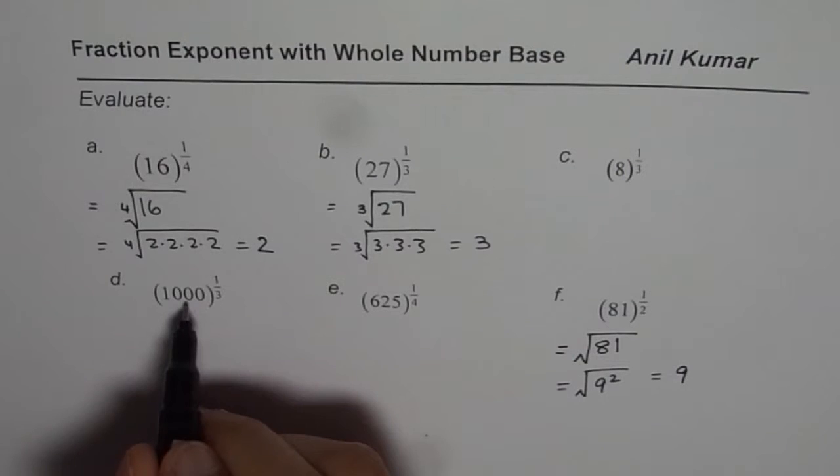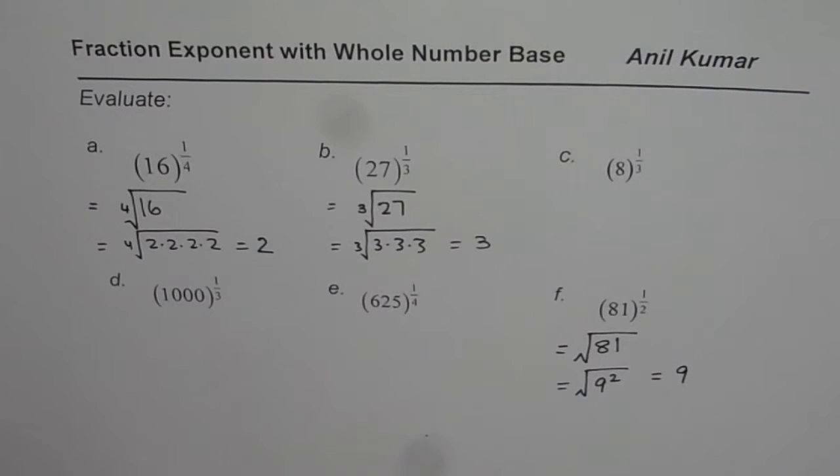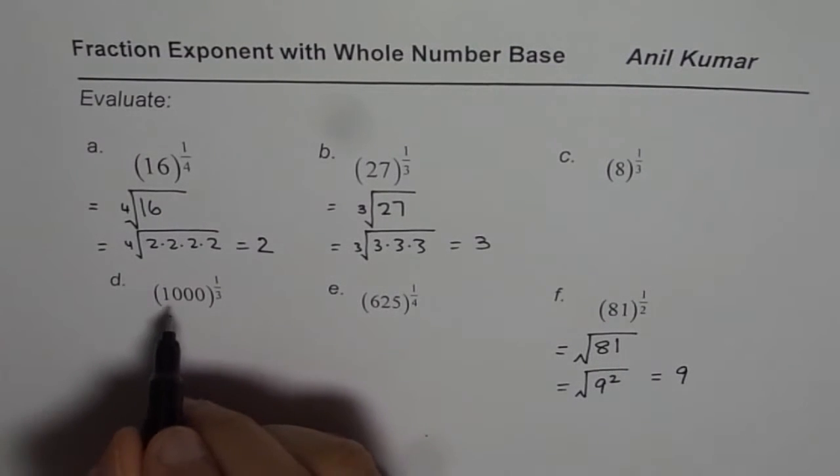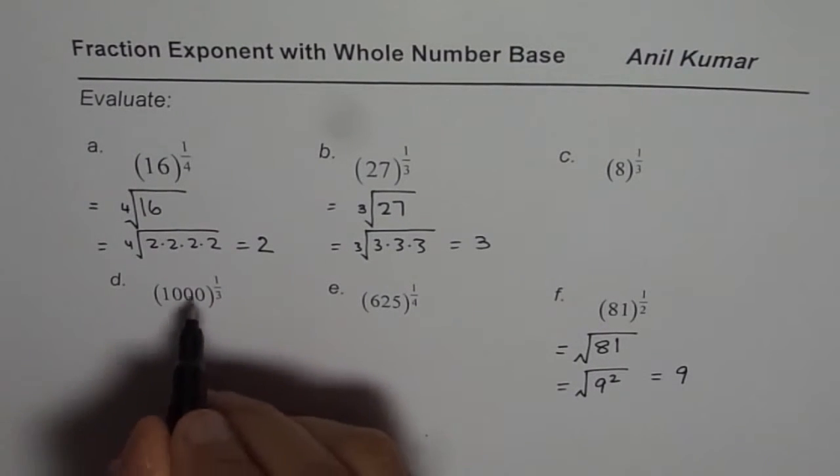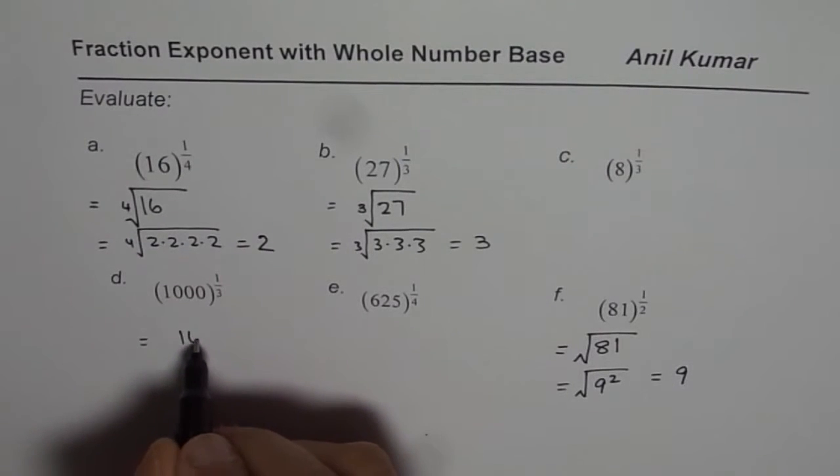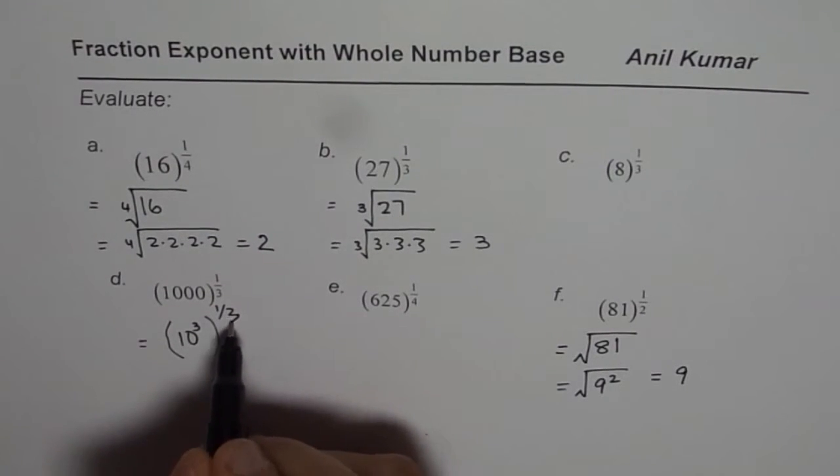Now, here, 1000 to the power of 1 over 3. So, you need to find what it is. Alternate way to look into this is also like this. We could write 1000 as 10 to the power of 3. So, let me show you the alternate way of doing it. 10 to the power of 3 is 1000 and we have 1 over 3 outside.